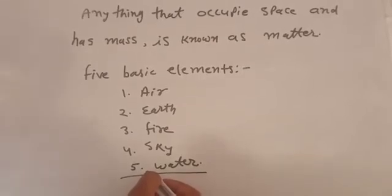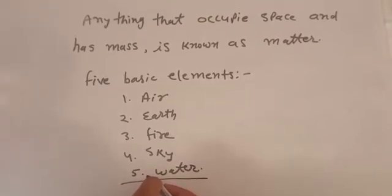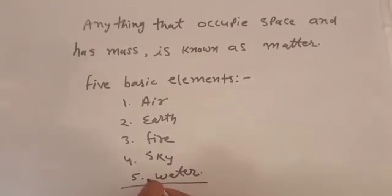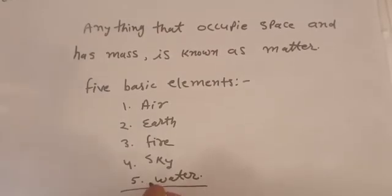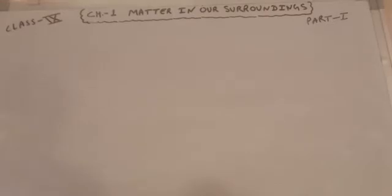In this chapter we are going to learn about matter based on its physical properties. According to physical nature of matter, we can say matter is made up of very small particles and these small particles of matter are known as atoms. The particles of matter are very small, they are small beyond our imagination.